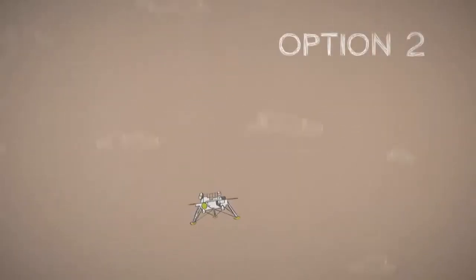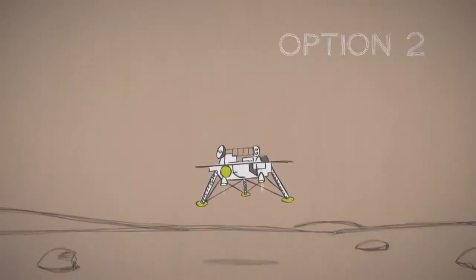With a large lander, use retro rockets and landing legs to touch down going about six miles an hour.